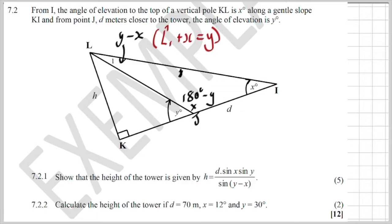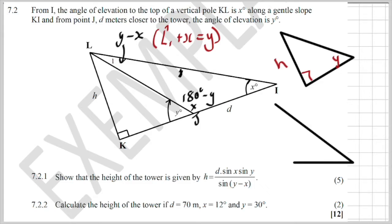So first of all, I've got triangle LKJ. Then I've got triangle LJI. So LKJ and LJI. I'm putting in as much information as I can.